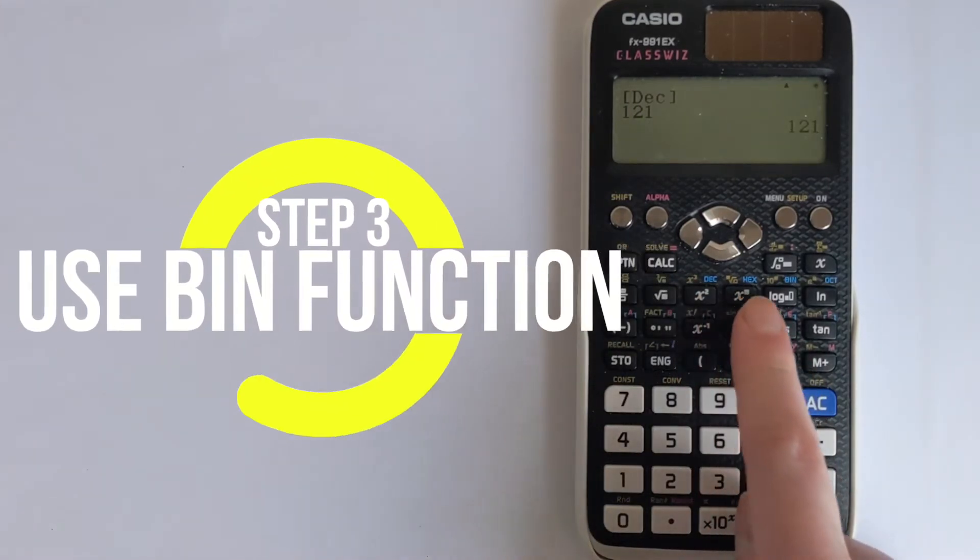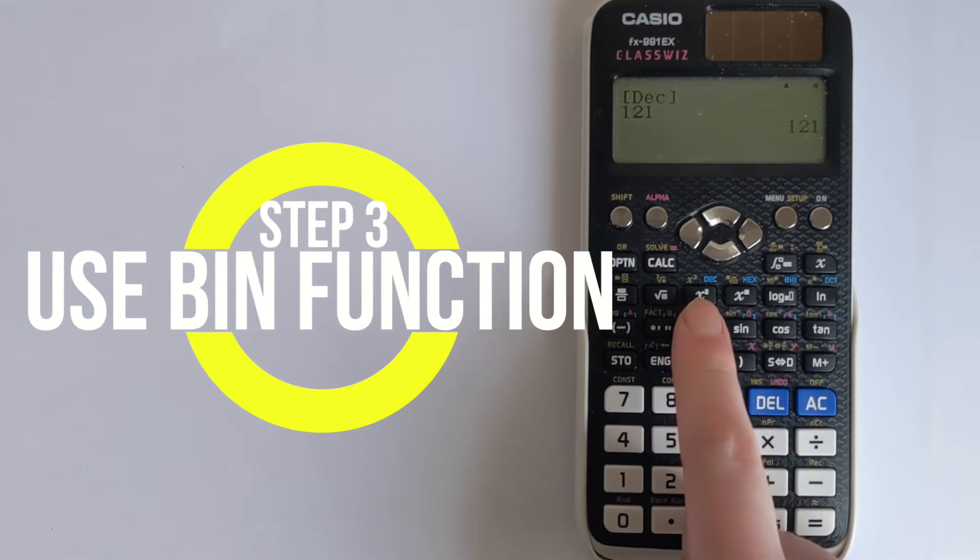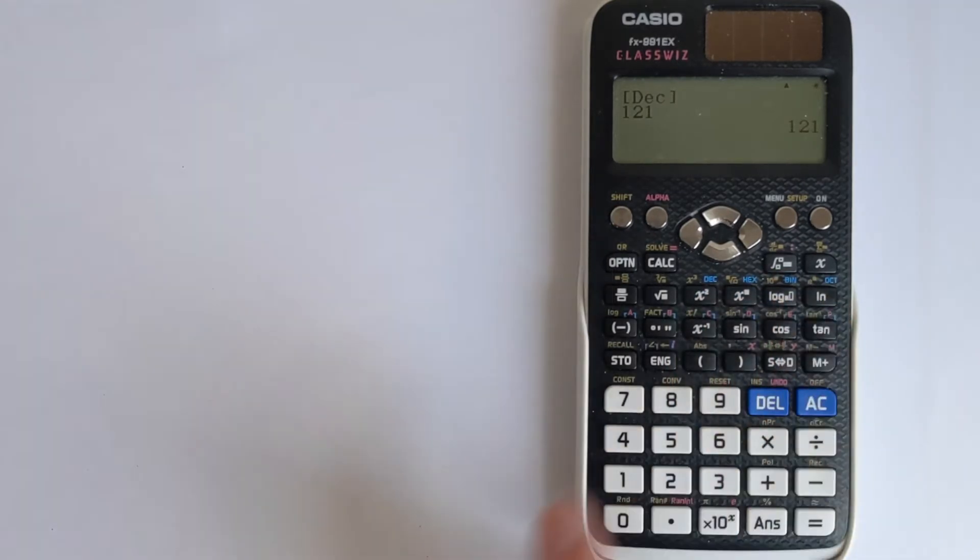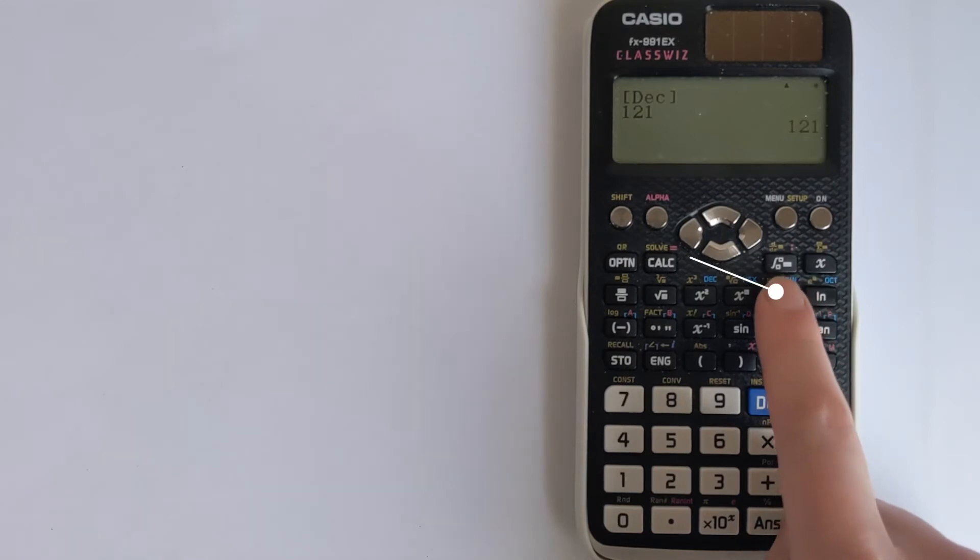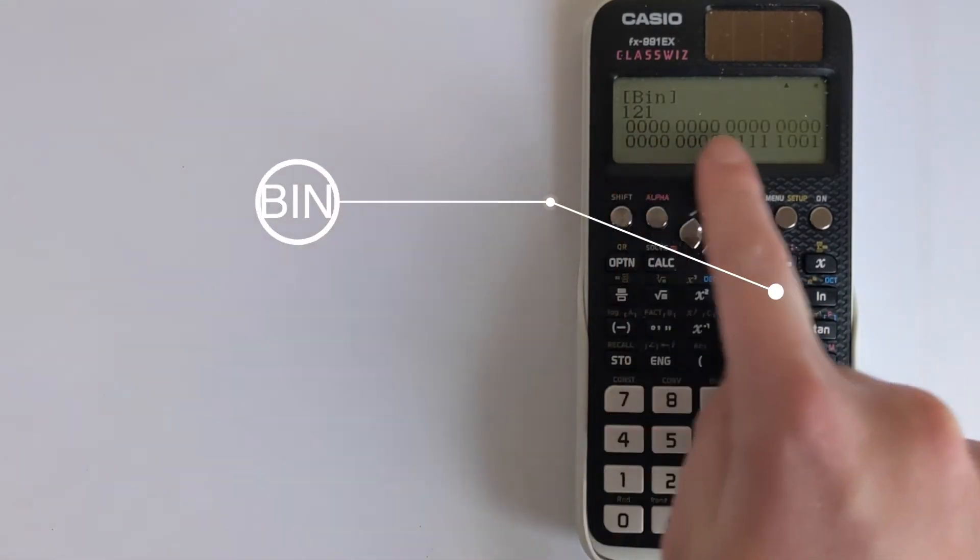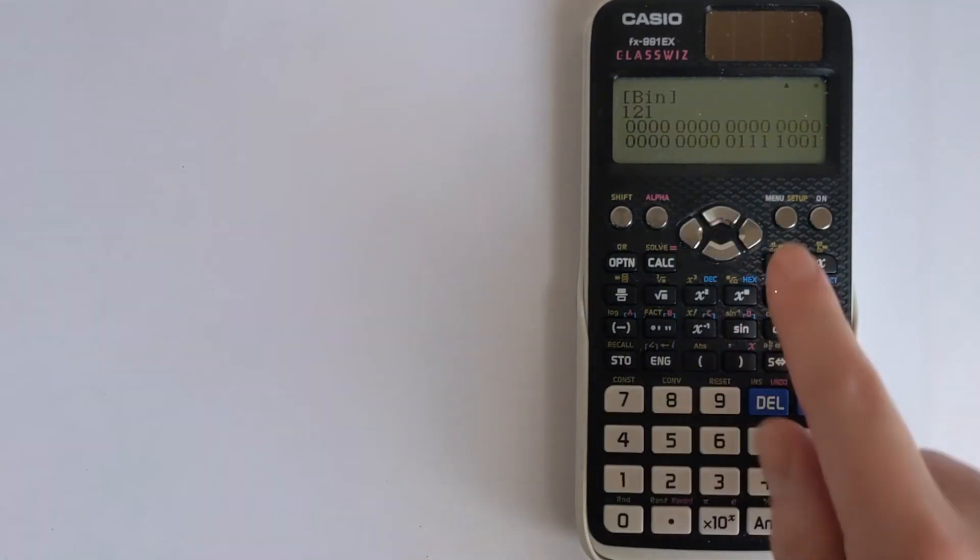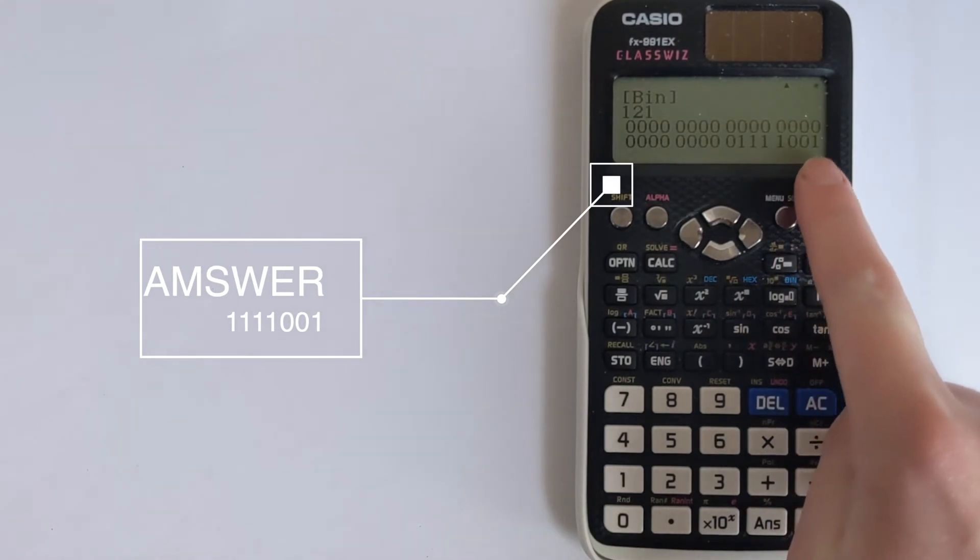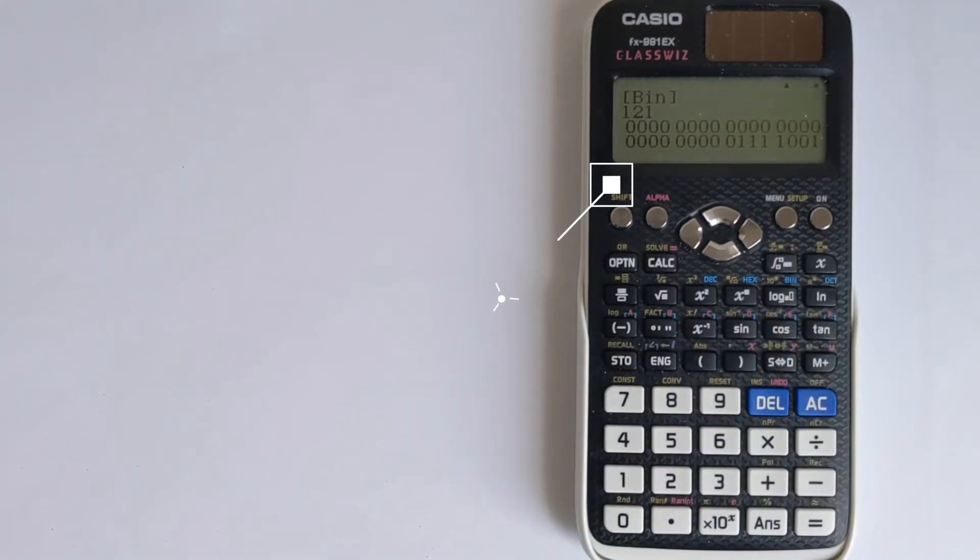Now we want to access these buttons here. We've got decimal in blue, then hexadecimal, binary, and octal. We want binary so we press this button here and it does the conversion. All of these zeros can simply be ignored. The answer starts with the first number: 1111001, and that is our binary answer.